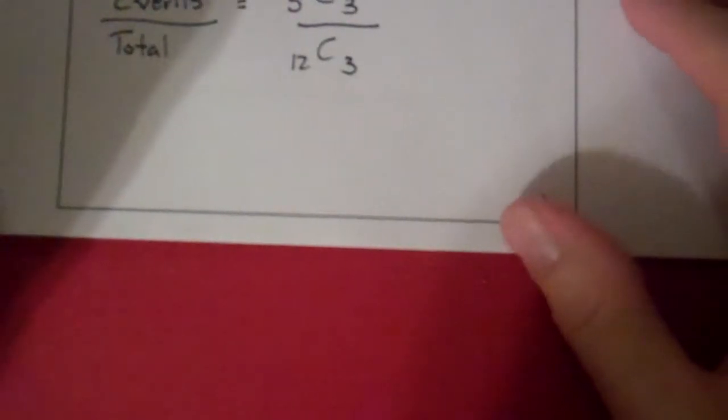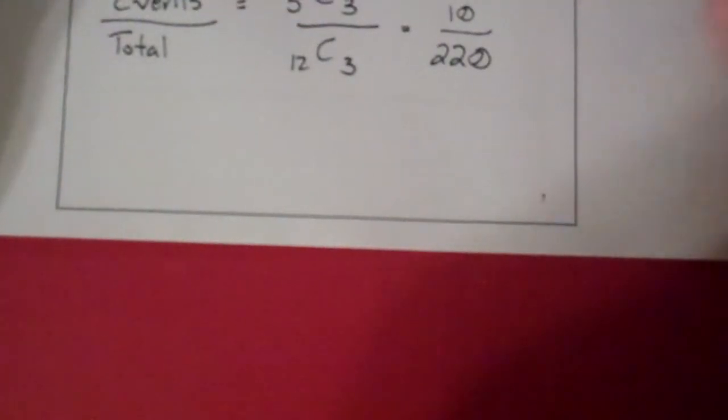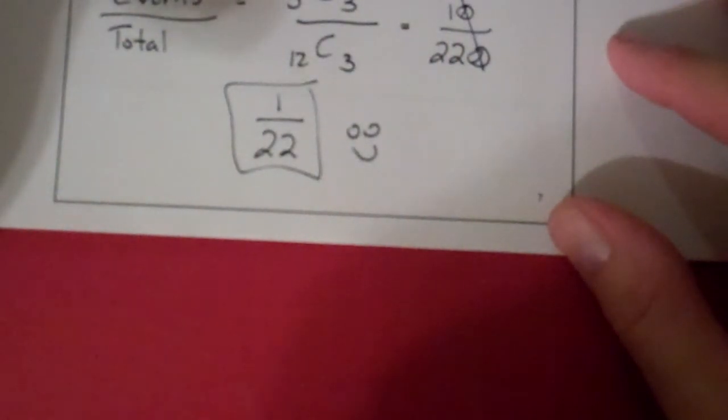And so if you do five choose three, you end up with 10 from your calculator. And if you do 12 choose three, you end up with 220 in your calculator. And of course, I can just reduce the zeros out there because of the base 10 system. And you get 1 over 22.